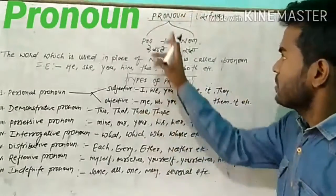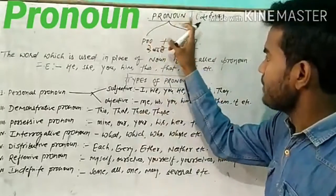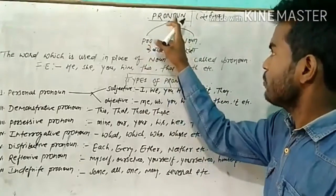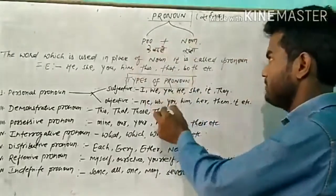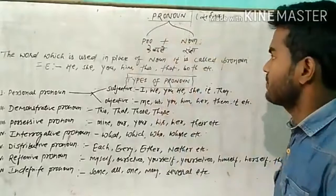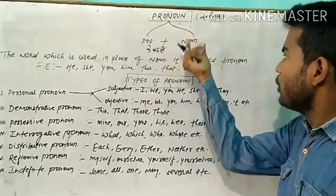Pronoun ہوتا کیا ہے? Pronoun I have classified into two ways. One is pro and second is a noun, right? Pronoun means ke badly and noun means sangya. Pronoun means ke badly, noun means sangya.